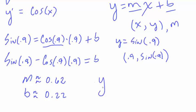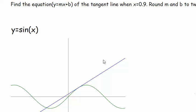So now we got everything we need. y is equal to 0.62x plus 0.22. So there is the equation to the tangent line at this point right here. Of course we never did approximate what y is, but you can do that if you want. This is what we wanted to come up with.